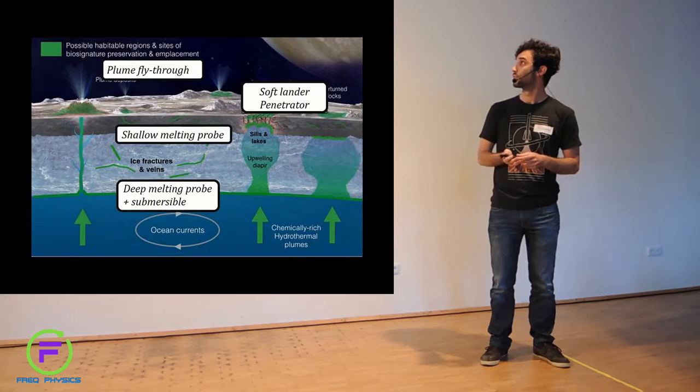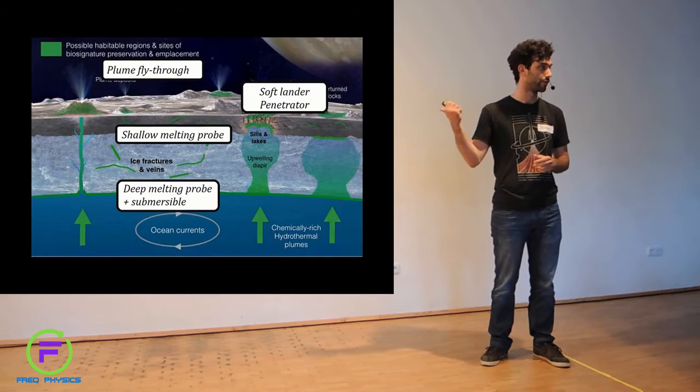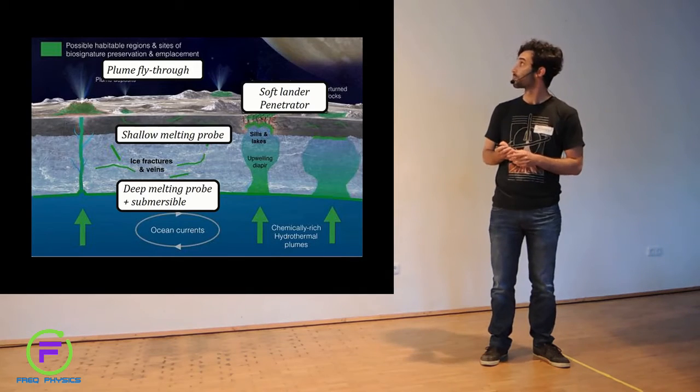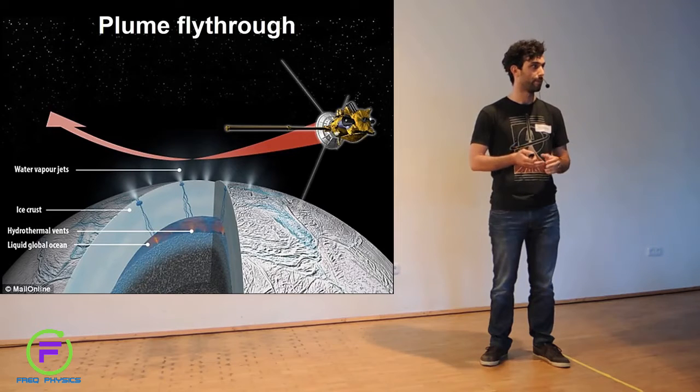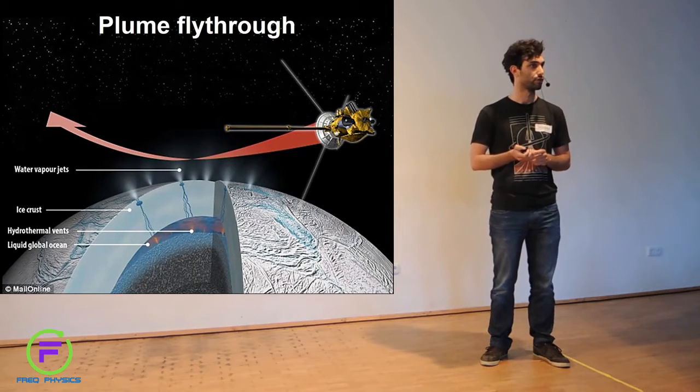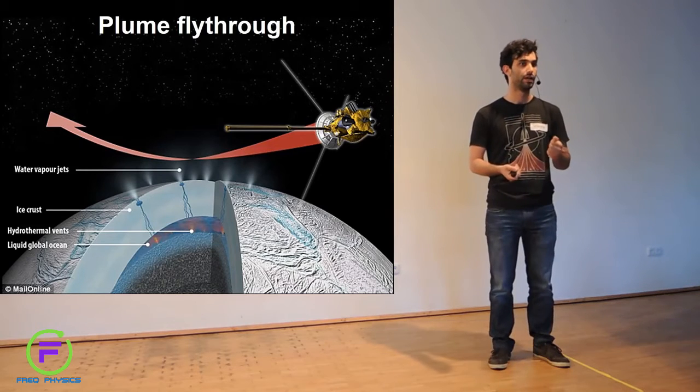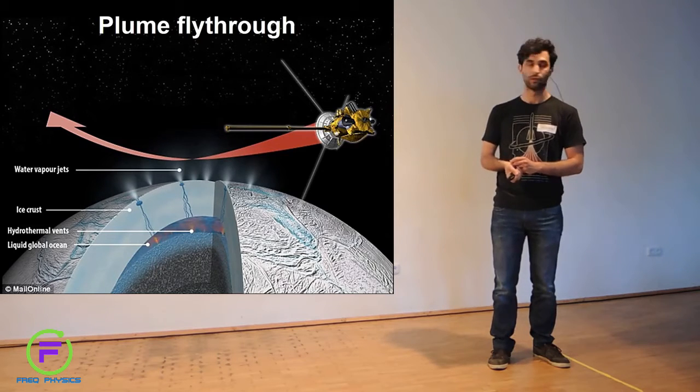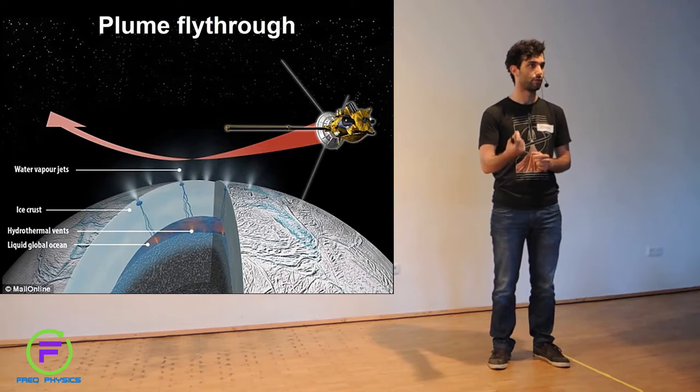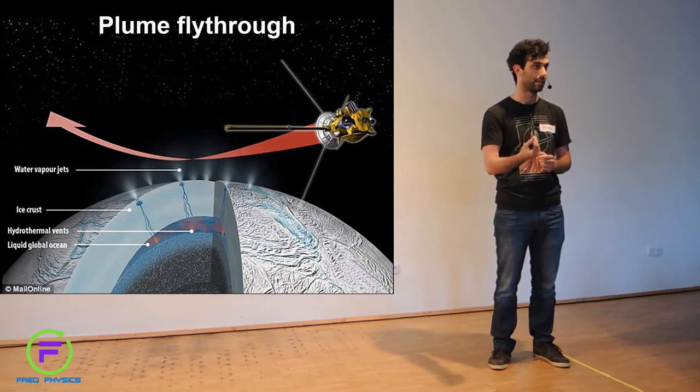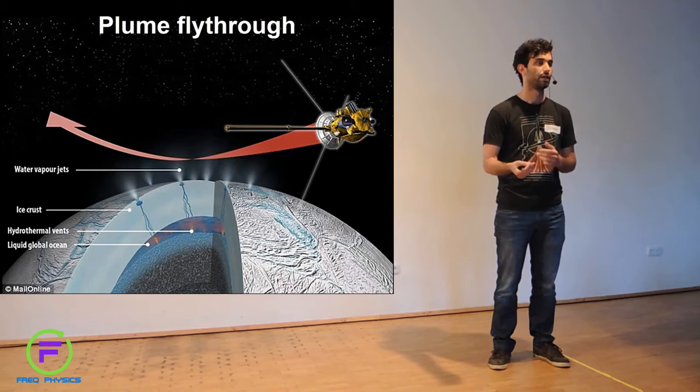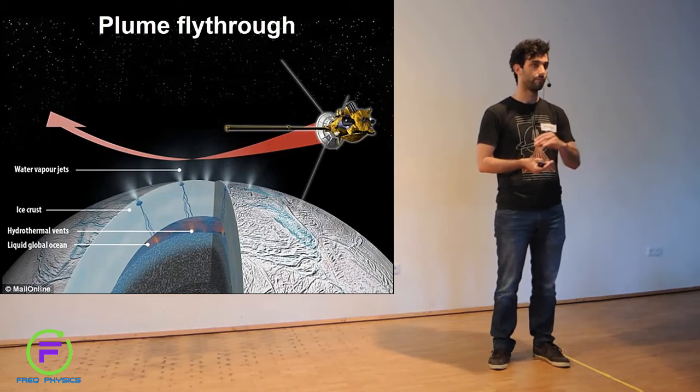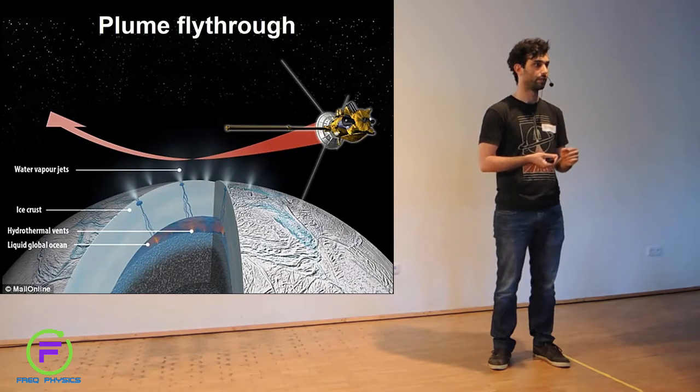In green we indicate places where either you have a possible habitat in the bottom and also the interface, or you have places where signatures from life are either trapped or transported to the surface, and then we can detect them. We can make a plume fly-through. When scientists discovered the plumes they were very happy. It means essentially you can get a free sample very likely from the ocean. What you can do is fly through them and you can capture particles in ballistic gel, because you have very high speeds, and you can analyze these particles either on the spot or you can even bring them back to Earth to be analyzed in laboratories.